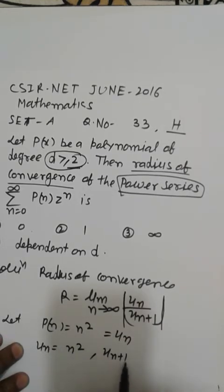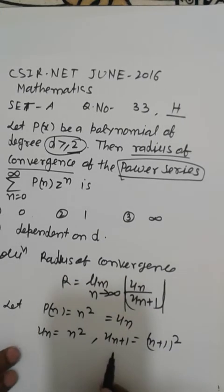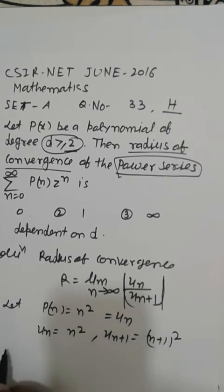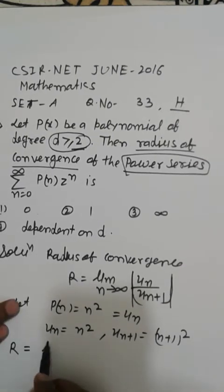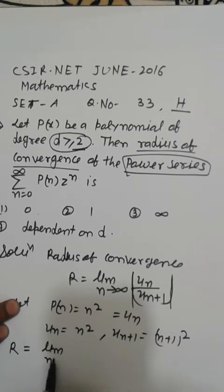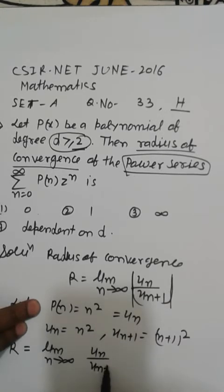We get Un+1 which is (n+1)². So now the radius of convergence R becomes the limit as n tends to infinity of Un divided by Un+1.